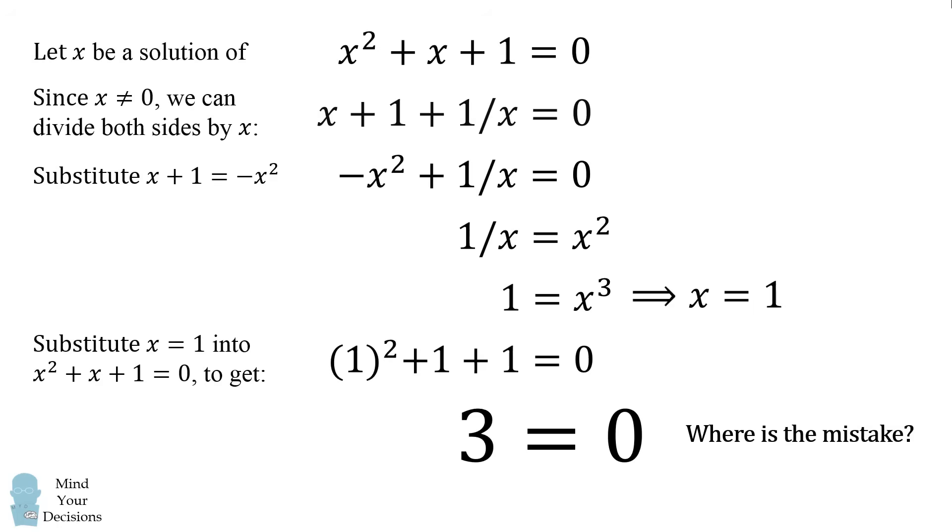So let's take a look at this false proof. Which step introduces the mistake from which the ultimate result of 3 = 0 originates? That would be between the second and third steps where we substitute x + 1 = -x².